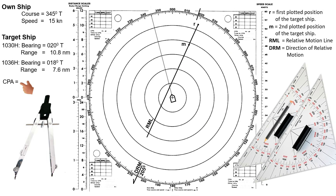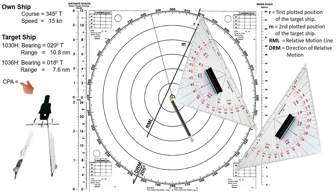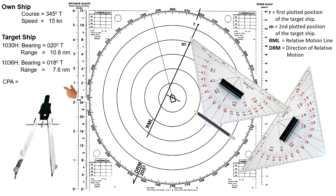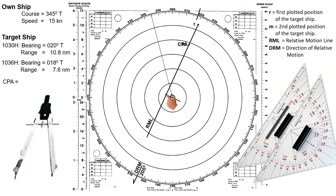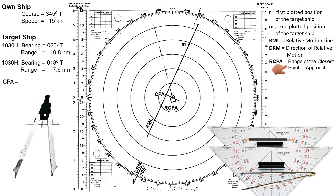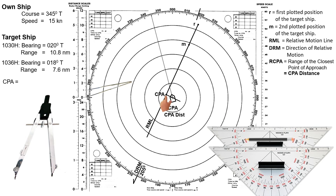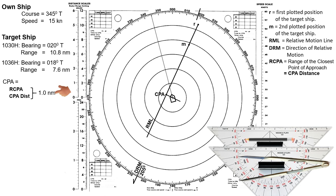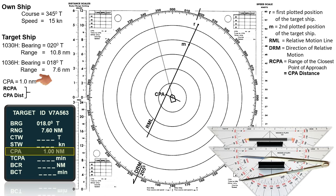To determine the CPA or closest point of approach, draw a line perpendicular to the relative motion line, extending to own ship's position. The point where this line intersects with the RML represents the CPA, indicating the point where the closest distance between two vessels occurs if both maintain their present courses and speeds. To determine the RCPA, or range of the closest point of approach (also referred to as CPA distance), measure the distance from own ship's position to this point. In this case, the distance is 1.0 nautical mile, which will appear on the radar screen simply as CPA.